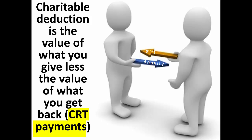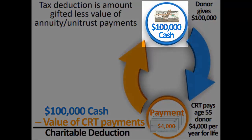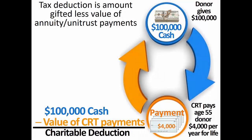Just as with any bargain sale or quid pro quo transaction, the charitable deduction is simply the value of what the donor gave, less the value of what the donor received back. What the donor receives back are the payments from the charitable remainder trust. This is still the process for valuing the gift, even if the donor chooses to have the payments made to someone else.